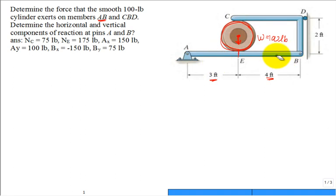And then let's find the member CBD. So CDB goes like this. It's L-shaped. It's pin connected at B. It has a normal contact with the cylinder at C.